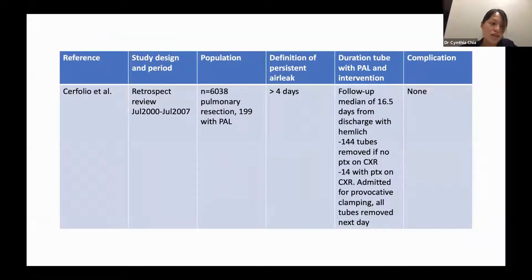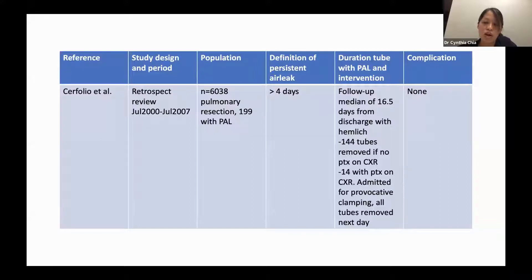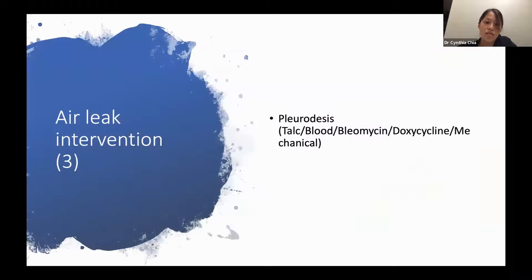Serfolio's larger retrospective review from July 2000 to July 2007 included 6,038 patients; persistent air leak was defined as more than four days. Patients were followed a median of 16.5 days from discharge with Heimlich valve. Of 144 tubes, 14 patients had pneumothorax on chest X-ray — they were admitted, clamped, and all tubes removed the next day. None had complications, demonstrating that keeping patients on Heimlich valve for up to 14 days after discharge is worthwhile to allow spontaneous resolution.